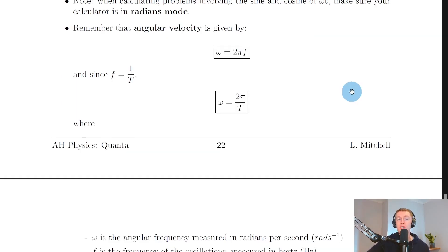It's useful to remember from the rotational motion topic that angular velocity or angular frequency is given by omega equals 2 pi f. And since f is equal to 1 over the period, we have omega equals 2 pi over T as well. So we've got two expressions for angular frequency, one in terms of linear frequency f, and one in terms of the period of the motion T.